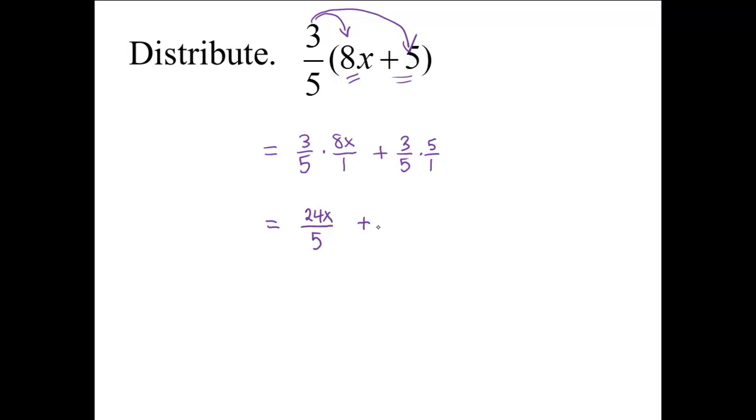We can do the same with the second multiplication of fractions. 3 times 5 is 15. Multiplying through the denominators, 5 times 1 is 5.